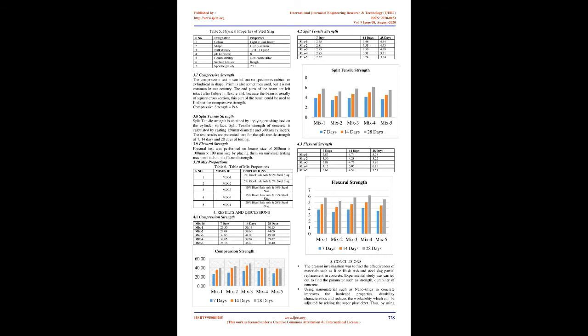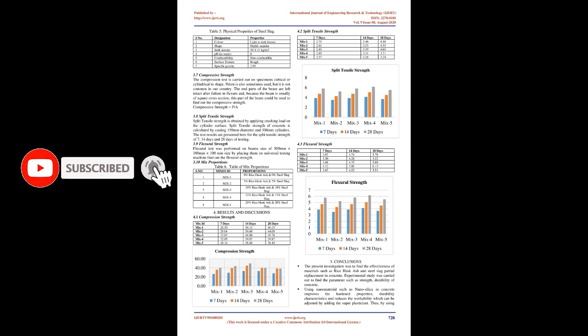3.2 Fine Aggregate: The sand passing through 4.75 mm sieve and retained on 600 micron sieve, conforming to Zone 3 as per IS 383-1970, was used as fine aggregate. The sand is free from clay, silt, and organic impurities. The aggregate was tested for gradation, fineness modulus, and specific gravity in bulk modulus in accordance with IS 2386-1963. Sieve analysis was carried out and the results are shown.